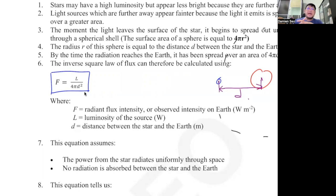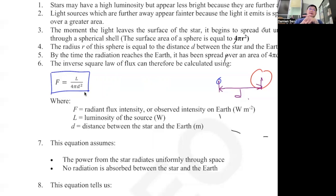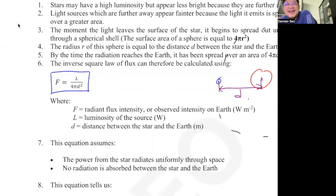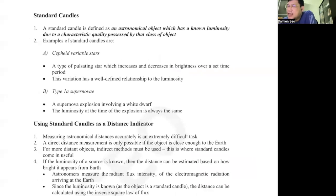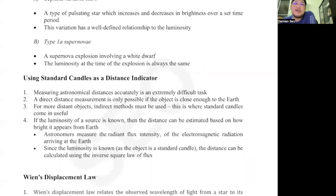That's how astronomers can estimate how far galaxies are away. The most recent news I read was about a planet discovered in a different galaxy with conditions very similar to Earth — similar temperature, distance, and mass, meaning it could hold life. But it's a few million light years away. That's how astronomers use standard candles as distance indicators.